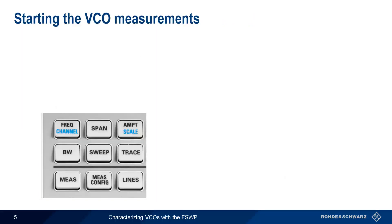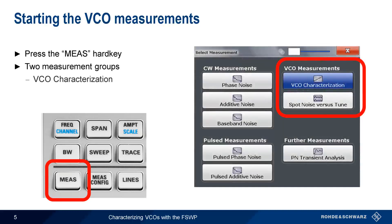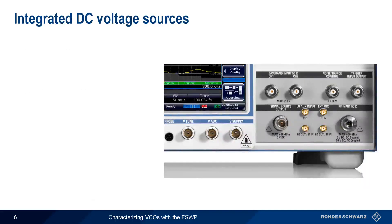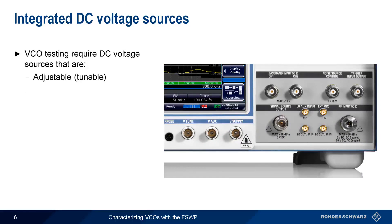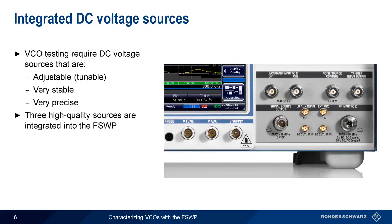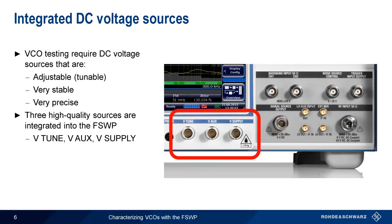To start VCO measurements on the FSWP, first press the Measure hard key on the instrument front panel. VCO measurements are divided into two groups: VCO characterization and spot noise versus tune. We'll cover both of these groups in this presentation, starting with VCO characterization. Both groups of VCO measurements require DC voltage sources that are adjustable or tunable, highly stable, and highly precise. The FSWP has three high-quality DC voltage sources available via BNC connectors on the instrument front panel: V-tune, V-aux, and V-supply.